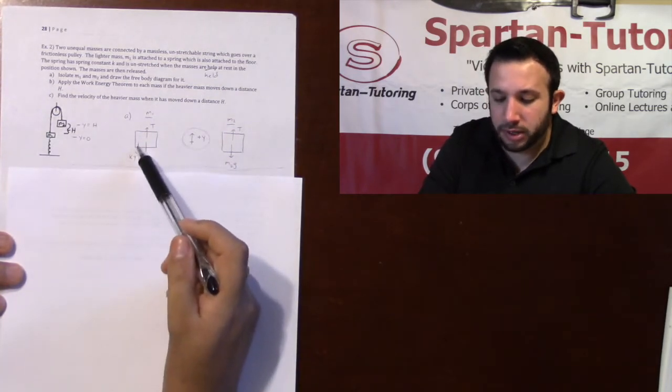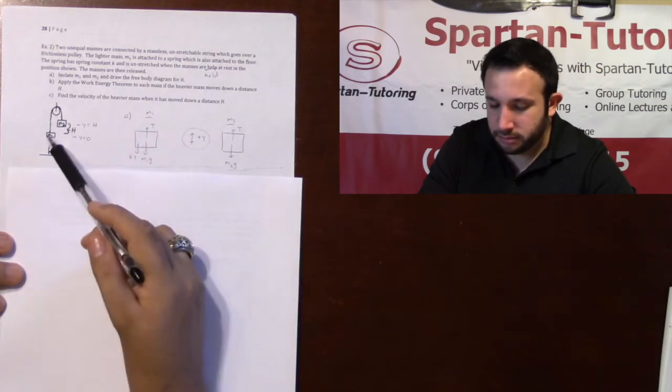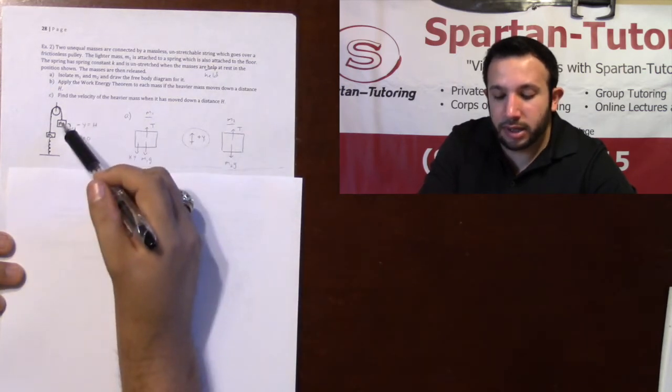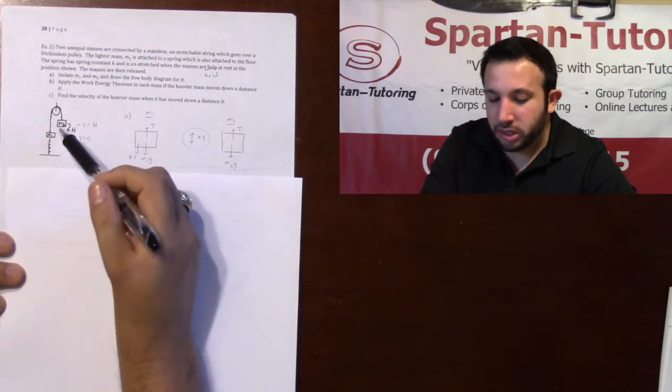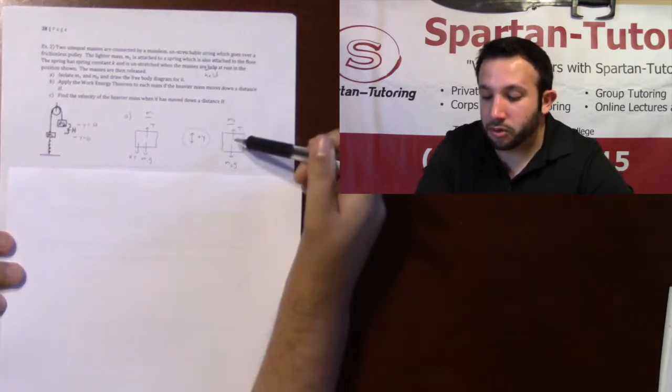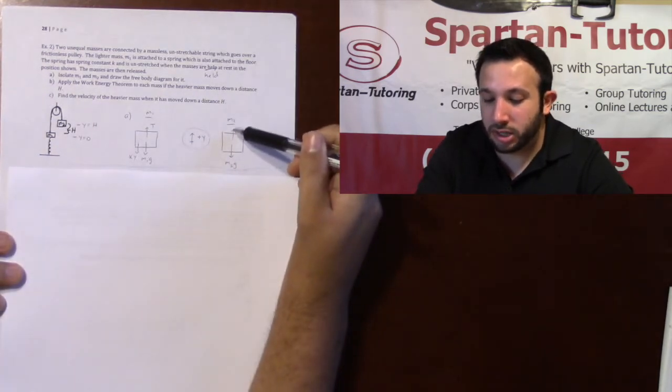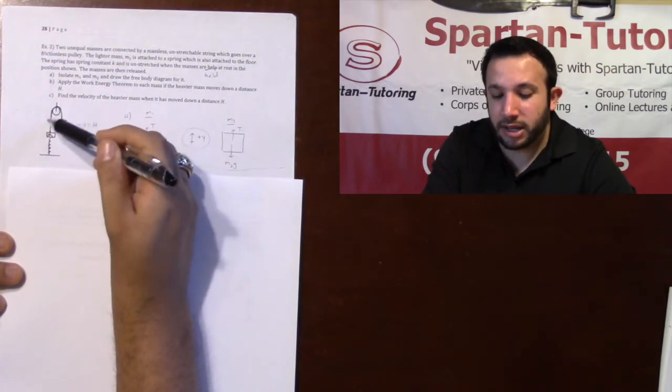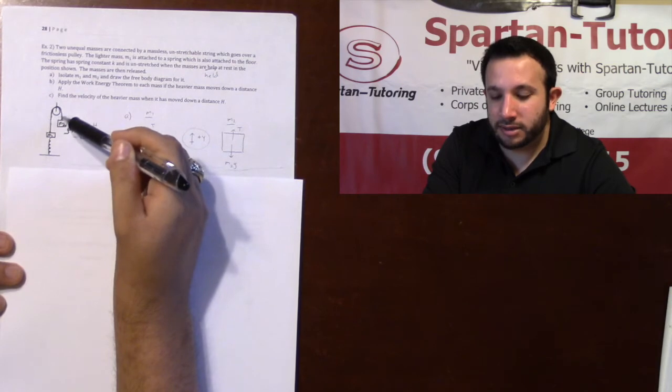You have two external forces: you have a tension pulling it up and you have a spring—we're going to call it k times y—the force of that spring coming down. As for m2, you have m2g coming down, no normal, no friction because you have no surface. Your only other external force is that tension coming up. Over a frictionless pulley, the tensions on either side are exactly the same.